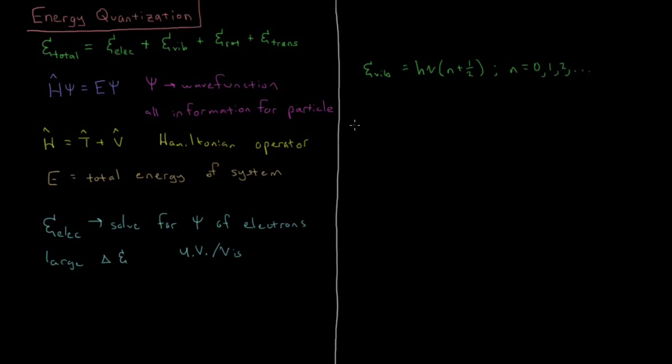And typically for vibrations you have 3n minus 6 modes for a given n atom molecule. So if I have a molecule with say four atoms, then 3n is twelve, 3n minus 6 is six.